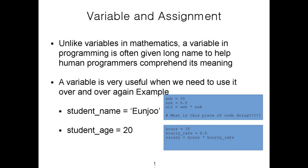You can name your variable any way you like — a really long name or a very short name — as long as it complies with the variable naming conventions mentioned earlier. It is very common practice for programmers to name their variables with self-descriptive names. For example, you would name a variable storing a student's name as student_name, and a variable storing a student's age as student_age.